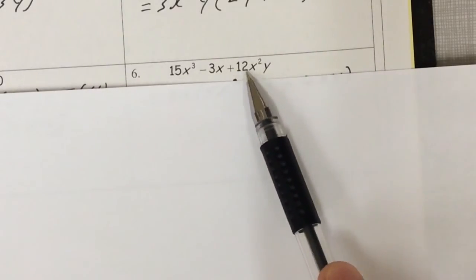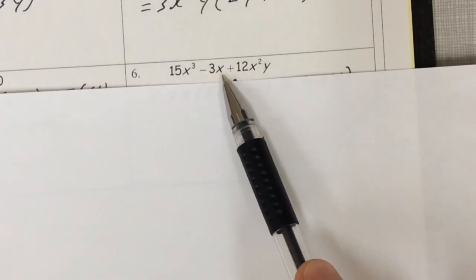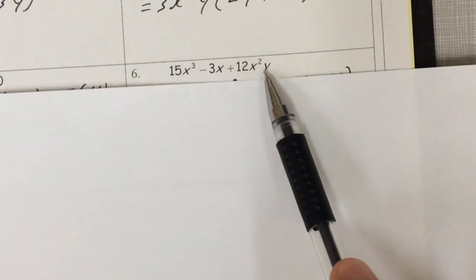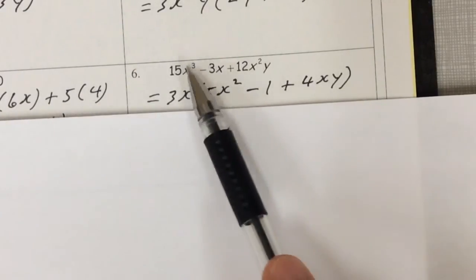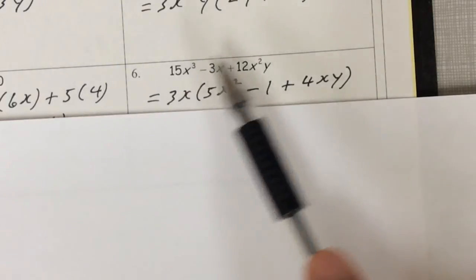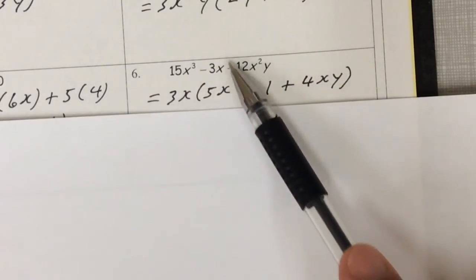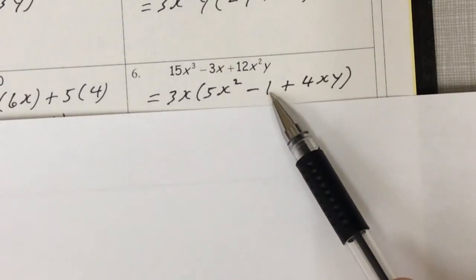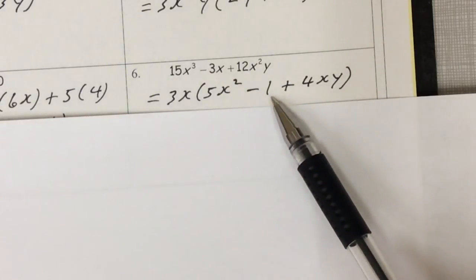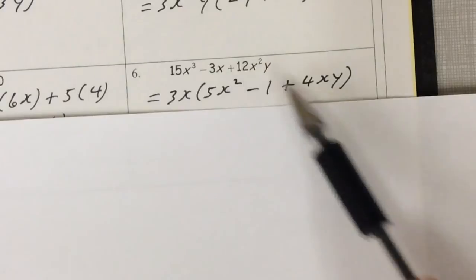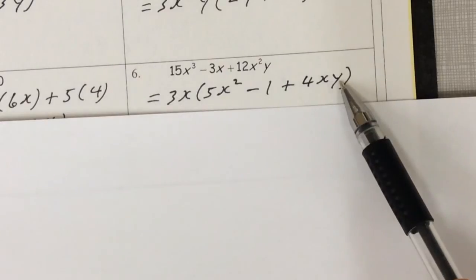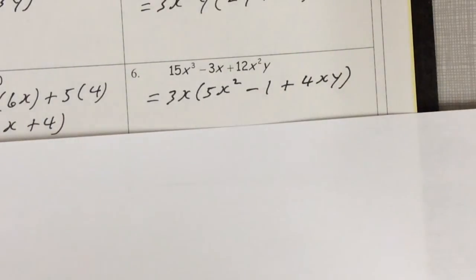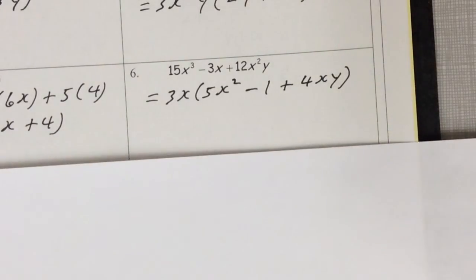Next: 15x cubed minus 3x plus 12x squared y. 3 is a common factor of 3, 12, and 15. x is the common factor of x, x squared, and x cubed. There is no common factor with y. So we've got 3x outside. 5x squared: 3 times 5 is 15, x times x squared is x cubed. 3x is exactly this term, so I write minus 1 — 3x times 1 is 3x, you can't leave that blank. And 3 times 4 is 12, x times x is x squared, then I need a y. So: 3x times 5x squared minus 1 plus 4xy.